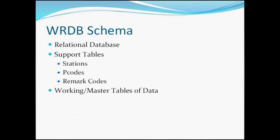A bit about the schema: it's made up of three main support tables — stations tables, P code tables, and remark code tables. This structure is rigid; the user cannot modify it. Station tables contain monitoring location specifics: station ID, station name, latitude, longitude, and other ancillary data. P codes or parameter codes contain the descriptor of what was analyzed or modeled — dissolved oxygen, chlorophyll A, and so on. Remark code tables contain flags typically generated in the laboratory indicating a value was below detection limit or calculated from other values.